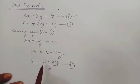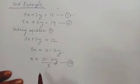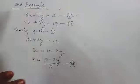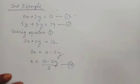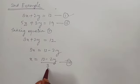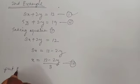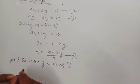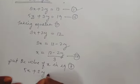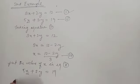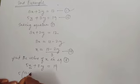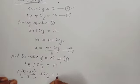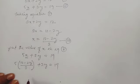Since the value of x came from equation 1, we must not put it back into equation 1 — we put it into equation 2. Writing equation 2: 5x plus 3y equal to 19. In place of x, we put 5 times (12 minus 2y divided by 3), plus 3y, equal to 19. Transposing 3y to the right-hand side: 5 times (12 minus 2y) divided by 3 equal to 19 minus 3y.